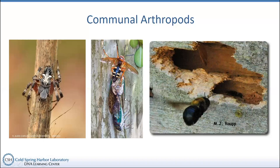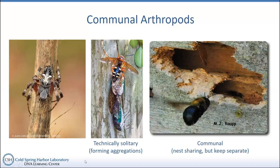These cicada hawks, while technically solitary, do form aggregations — they live by themselves and dig their own burrows, having four, five, or six cicadas in a single burrow and laying an egg on each. But they might group their burrows together. The advantage is that their babies will have other cicada hawks to reproduce with down the line.